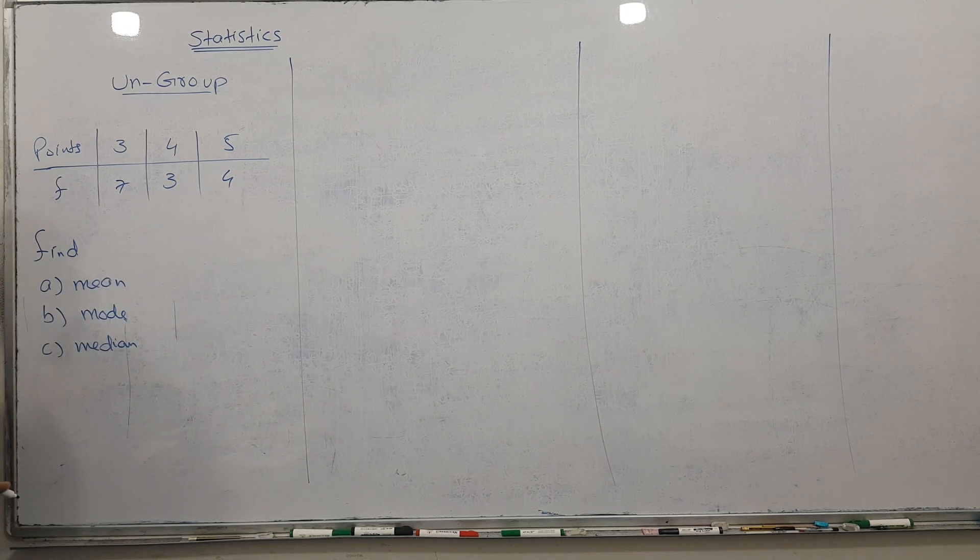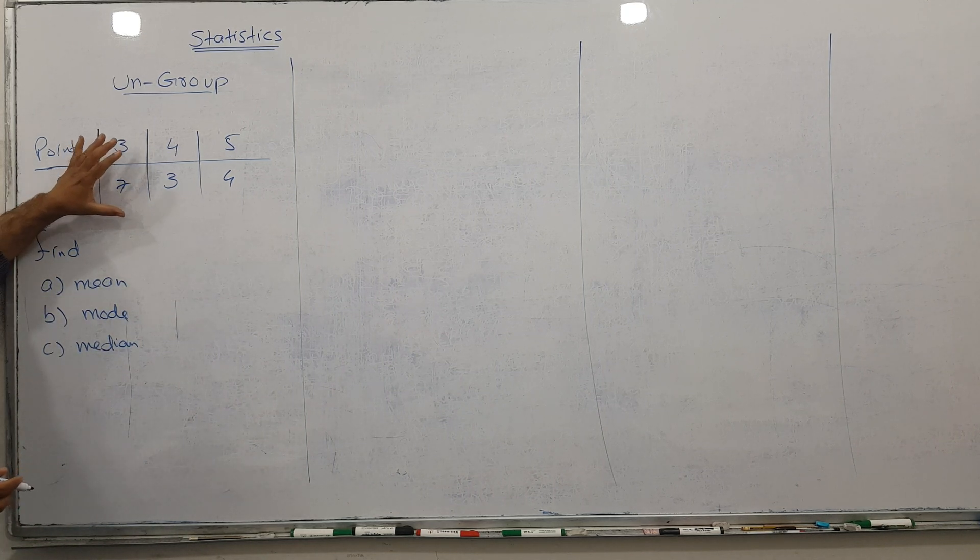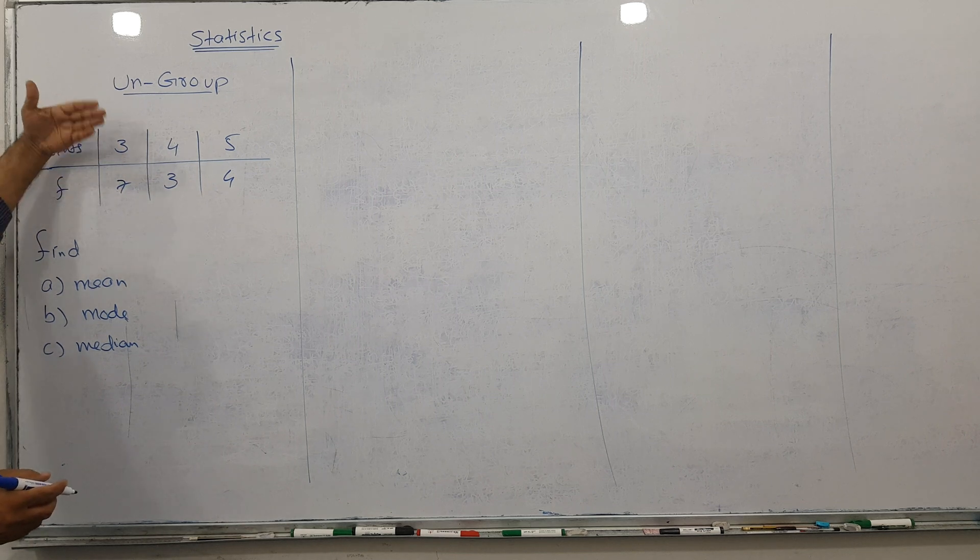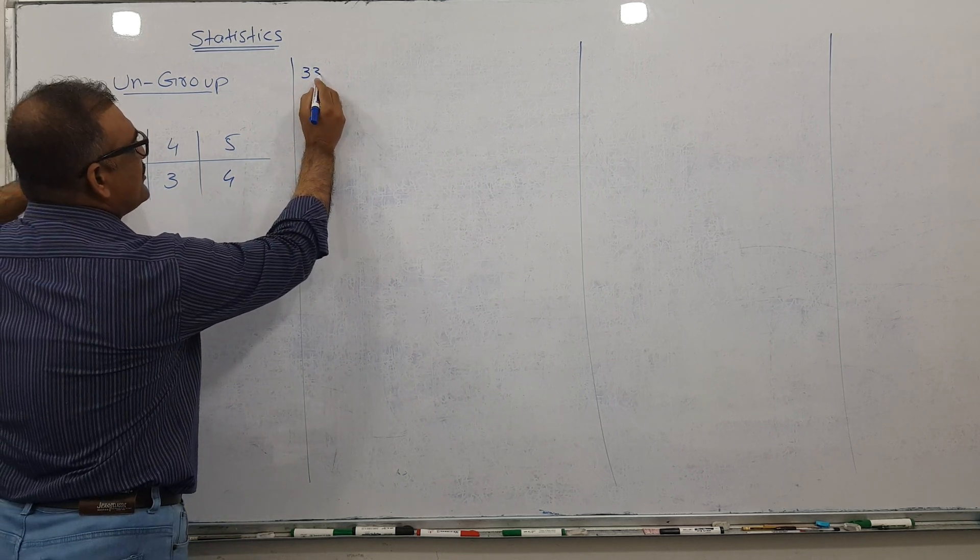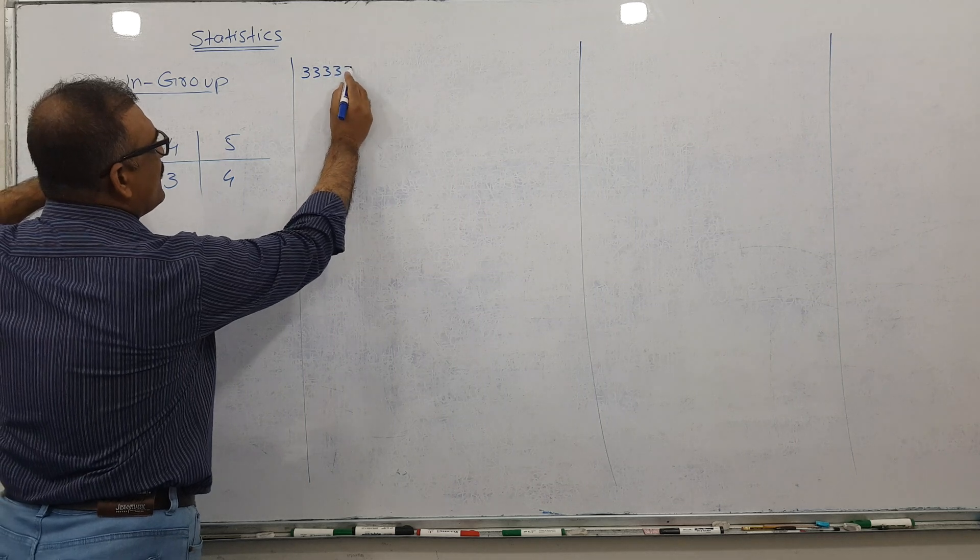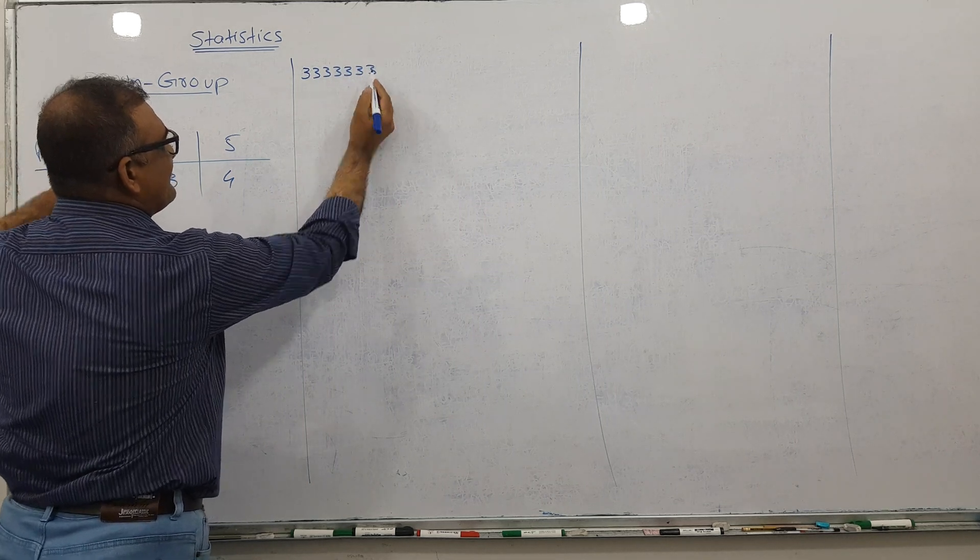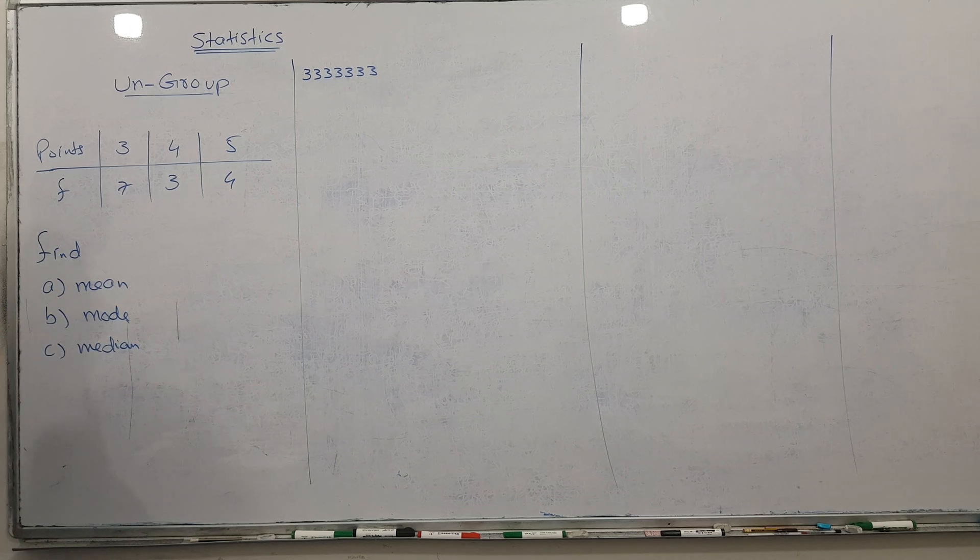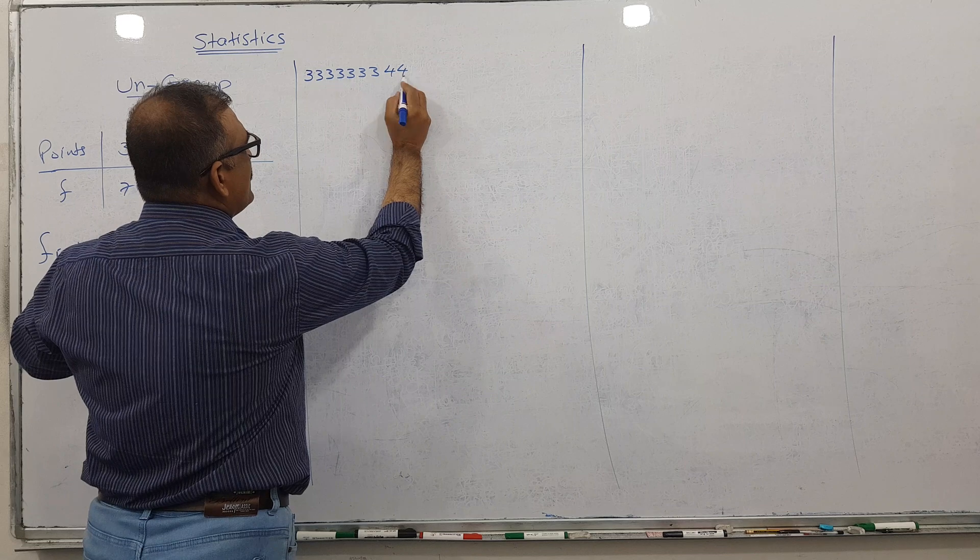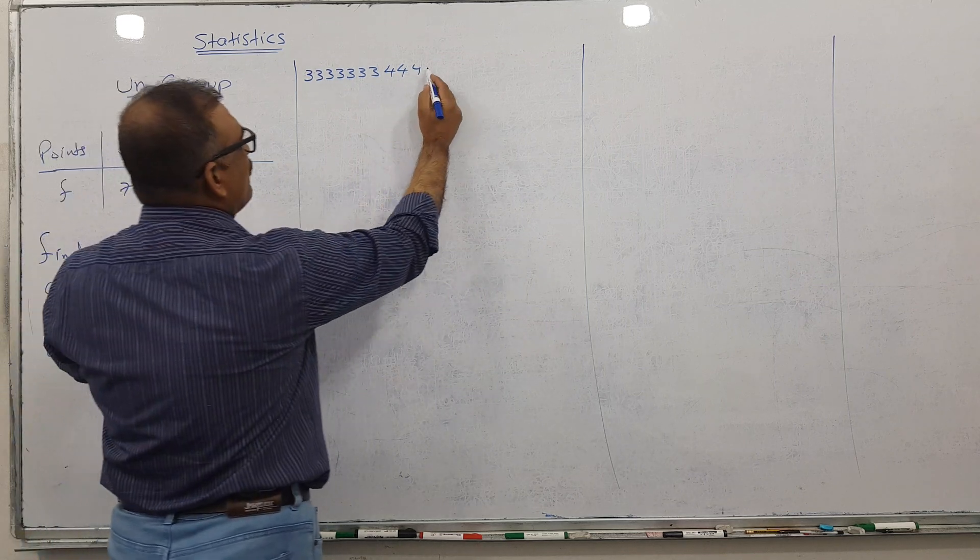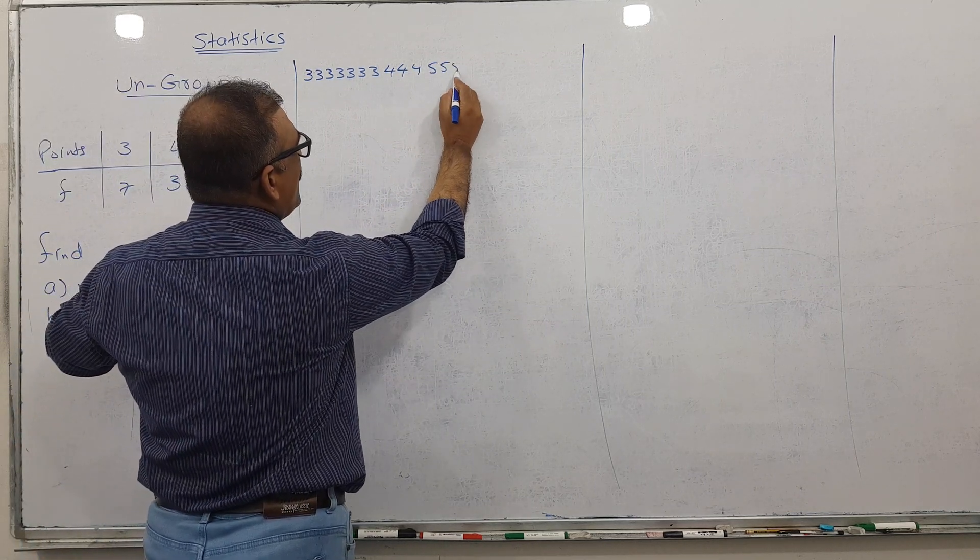To find the mean, let me explain what's going on behind the scene. Three comes seven times, like 1, 2, 3, 4, 5, 6, 7. Four comes three times, and five comes four times.